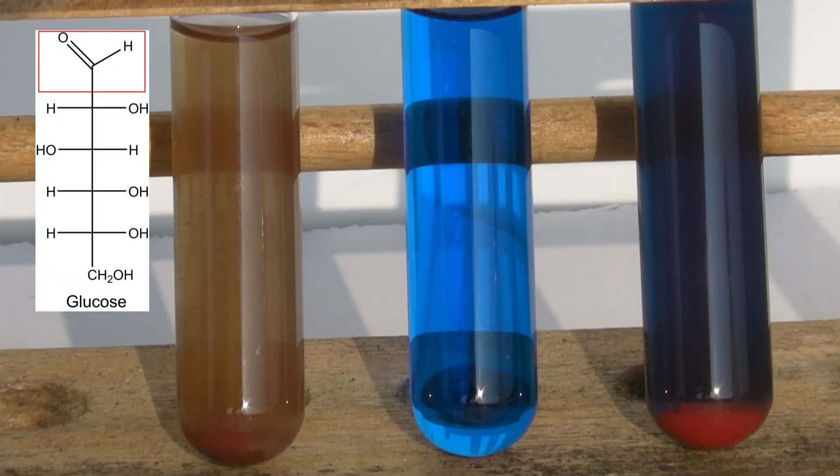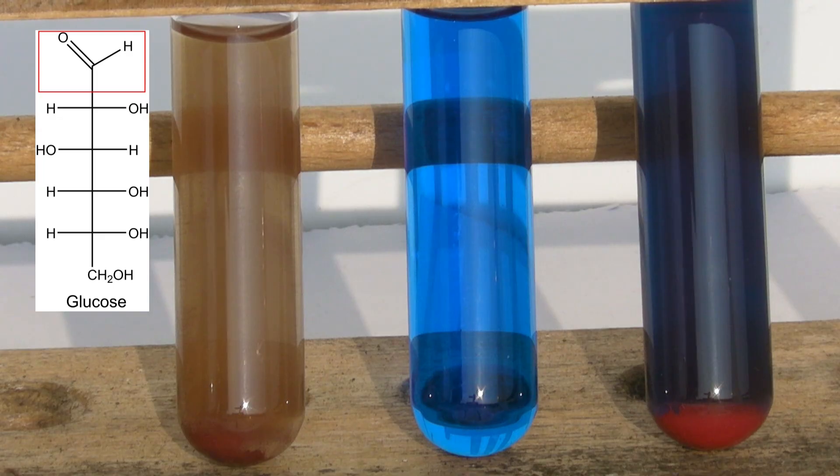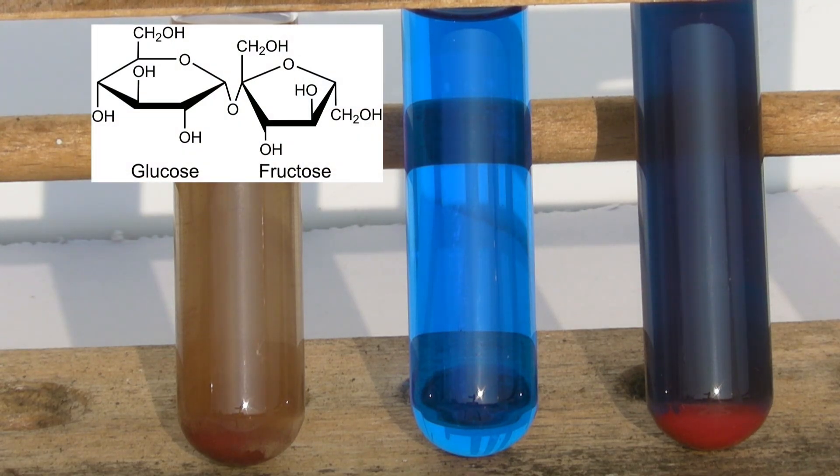Glucose gives a positive result because it has an aldehyde group in its open chain form. That's why this reaction can also be used to test for aldehydes. The sucrose didn't react because the ring of the glucose cannot open due to the glycosidic bond, so it's not a reducing sugar and the result is negative.